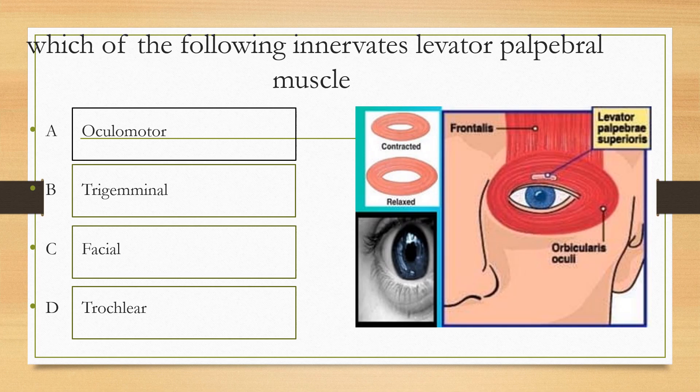Next question. Which of the following innervates the superior palpebral muscle? Options are: option A oculomotor, option B trigeminal, option C facial, option D trochlear. The answer is oculomotor.